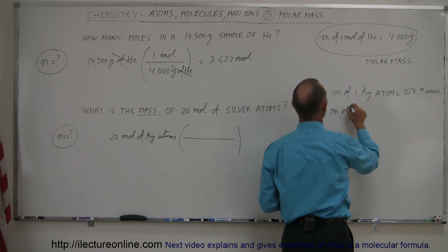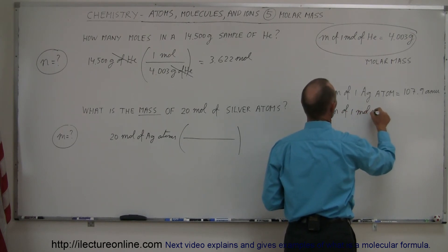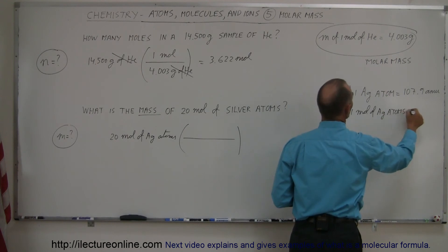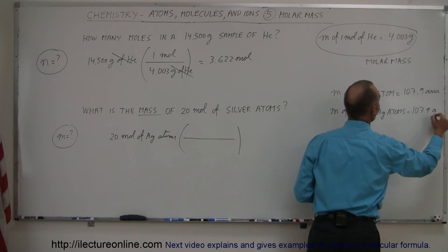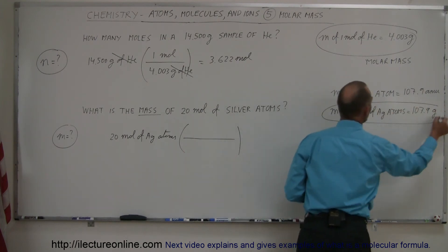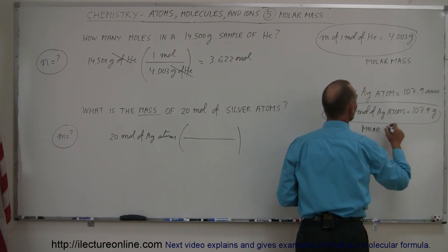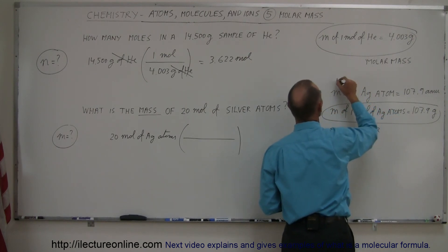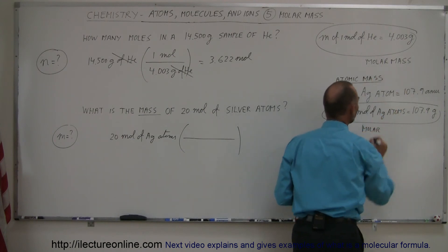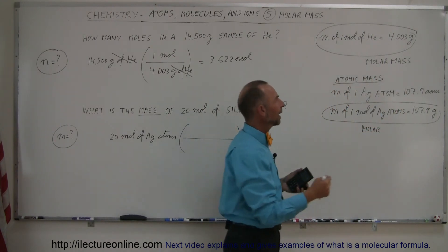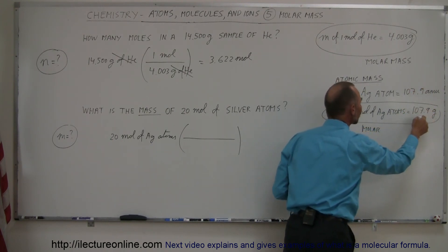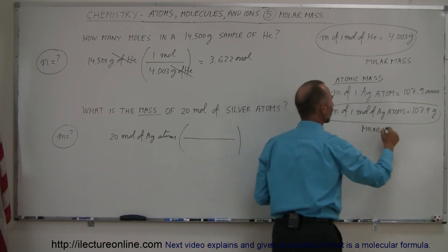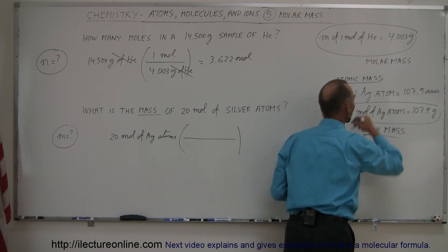We could then say the mass of one mole of silver atoms is equal to 107.9 grams. And this here is what we call the molar mass. So if they gave us the atomic mass, the mass of a single atom, if I then get that in terms of AMUs, I can use the same number and call it the number of grams for a mole of the same thing. So this is called the molar mass, and this is called the atomic mass.